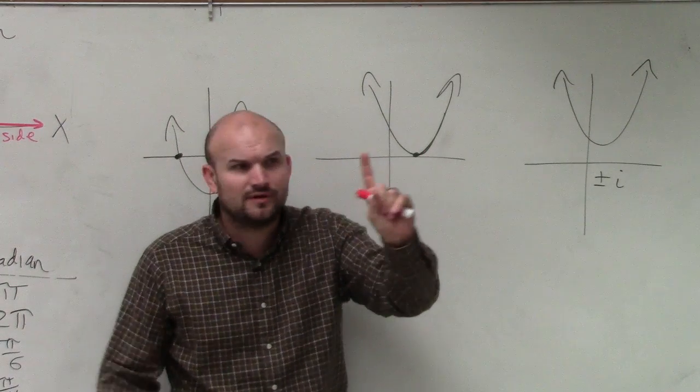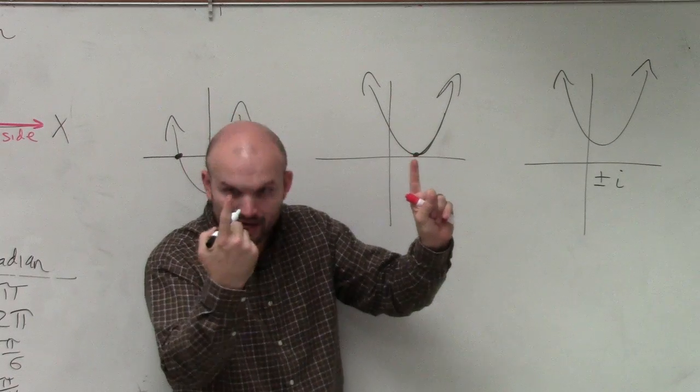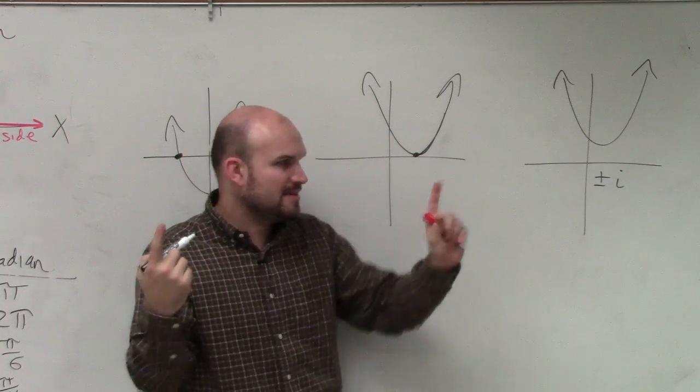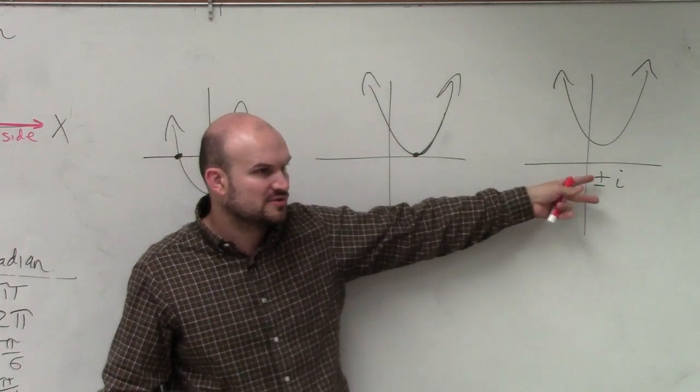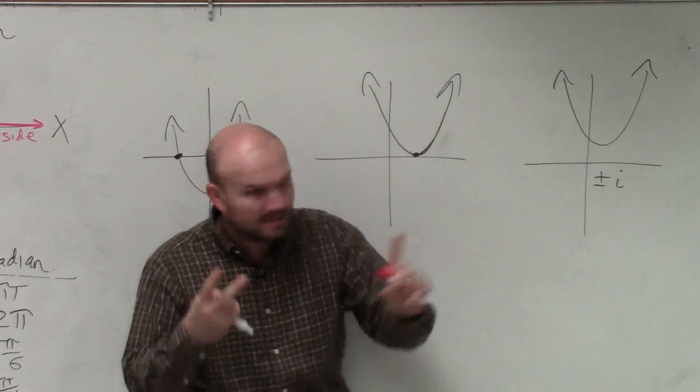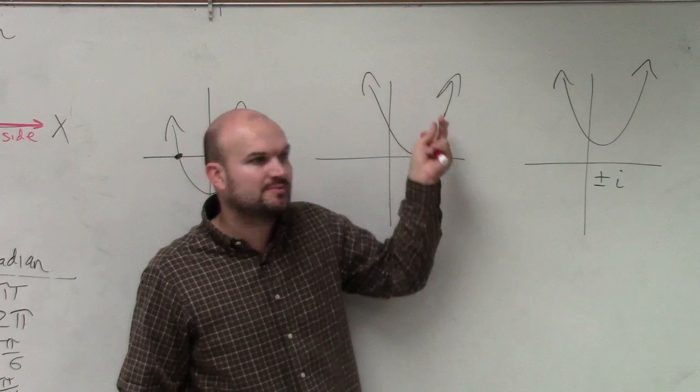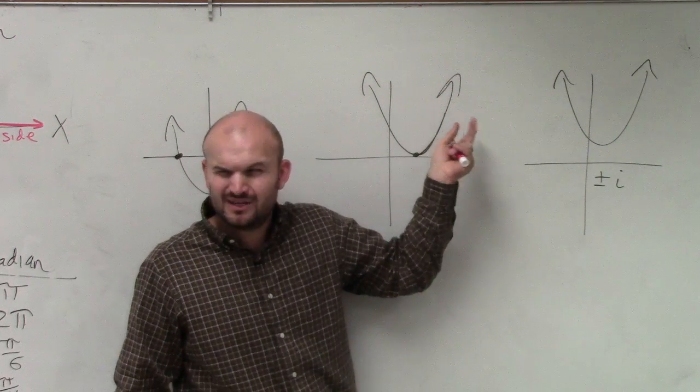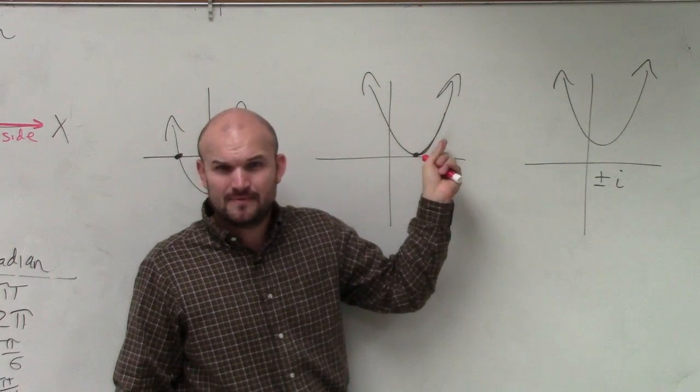So you could say, well, if it has one real, then it has to have one complex, right? That kind of makes sense. But the problem is, complex only comes in twos. So if you had one real and two complex, that would be a degree of three. But that doesn't match what this degree is, because we know this degree is two. Do you guys see how we kind of have an issue here?